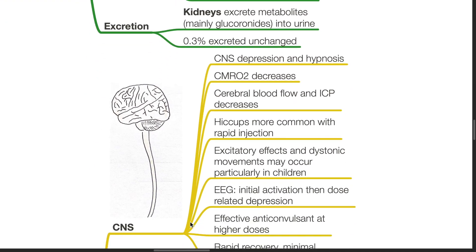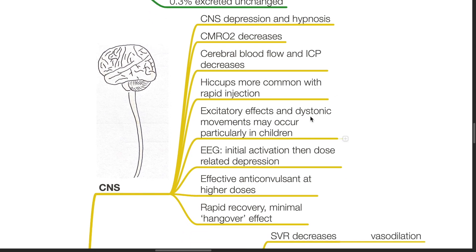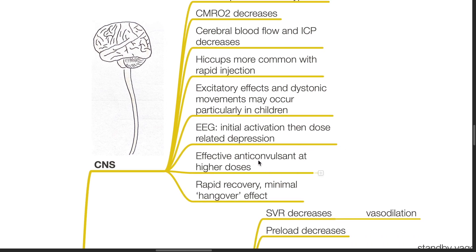Pharmacodynamics — CNS effects include CNS depression and hypnosis, reduction in cerebral oxygen metabolism, cerebral blood flow, and intracranial pressure. Hiccups are more common with rapid injection. Excitatory effects and dystonic movements may occur, particularly in children. The EEG pattern shows initial activation followed by dose-related depression. Propofol is an effective anticonvulsant at higher doses and offers rapid recovery with minimal hangover effect.